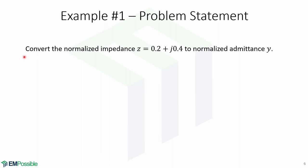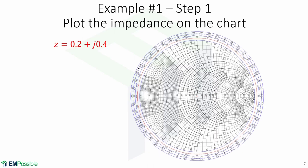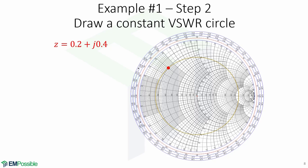Here is an example of how to convert to admittance. Convert the normalized impedance z = 0.2+j0.4 to normalized admittance y. As discussed previously, we first plot the impedance point on the chart — this is where it is located. Next, we draw our constant VSWR circle with origin at the center of the Smith chart and passing through the impedance point.